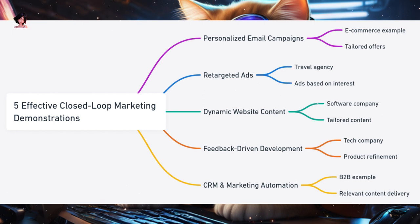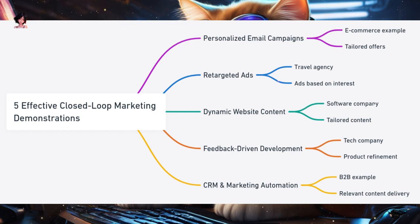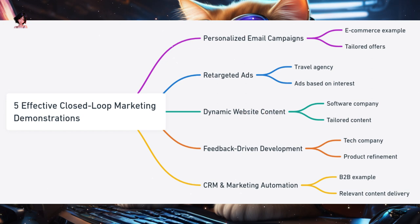Fourth, feedback-driven product development — a tech gadget company launches a new product and collects user feedback through surveys. They find that users want a specific feature, and the company then releases an updated version with that feature. Outcome: enhanced product offerings and increased customer loyalty. Fifth, integrated CRM and marketing automation — a B2B company uses a CRM to track leads and customer interactions. Their marketing automation platform triggers specific campaigns based on CRM data, ensuring potential clients receive timely and relevant content. Outcome: streamlined lead nurturing process and higher conversion rates.